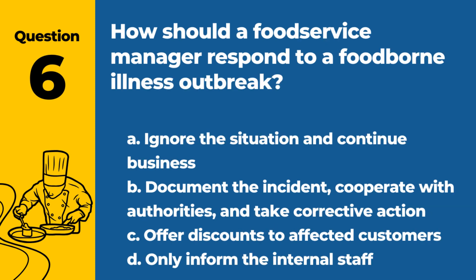Question 6. How should a food service manager respond to a foodborne illness outbreak? A. Ignore the situation and continue business. B. Document the incident, cooperate with authorities, and take corrective action. C. Offer discounts to affected customers. D. Only inform the internal staff. Answer: B. Document the incident, cooperate with authorities, and take corrective action.